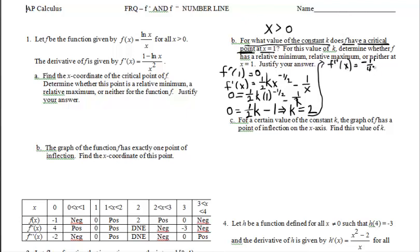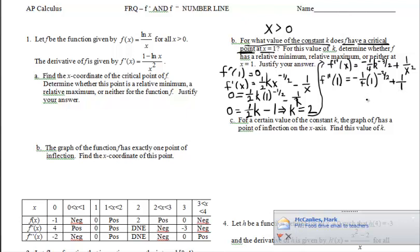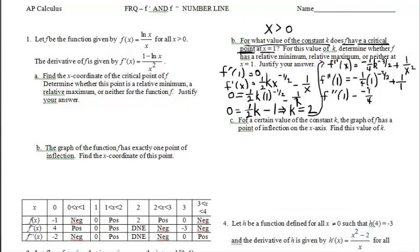Actually that might be the quickest thing to try and test real quickly, since I already found the second derivative. So let me go ahead and get the second derivative back up here in front. I think it was negative one-fourth K to the negative three-halves plus 1 over x squared. If we don't get zero, we're good. Let's see what happens. f double prime at 1.